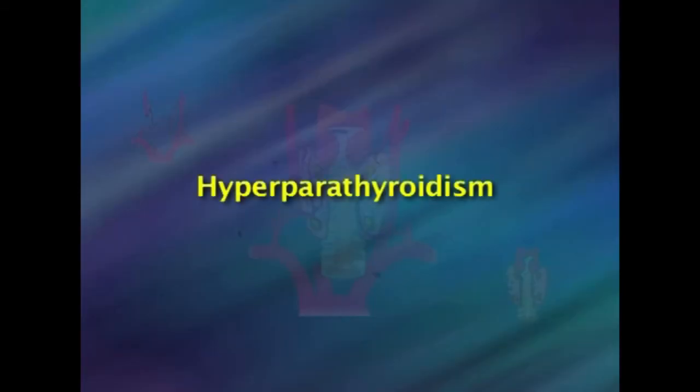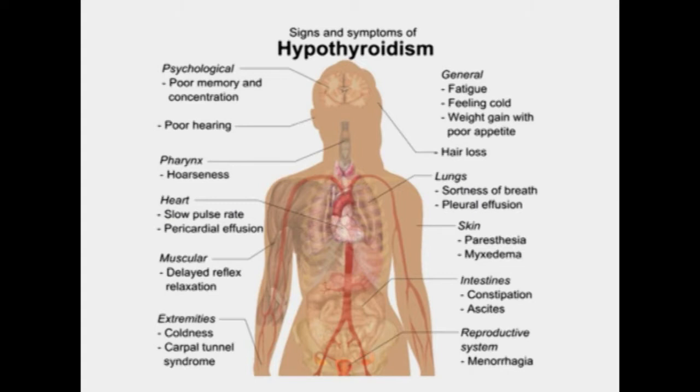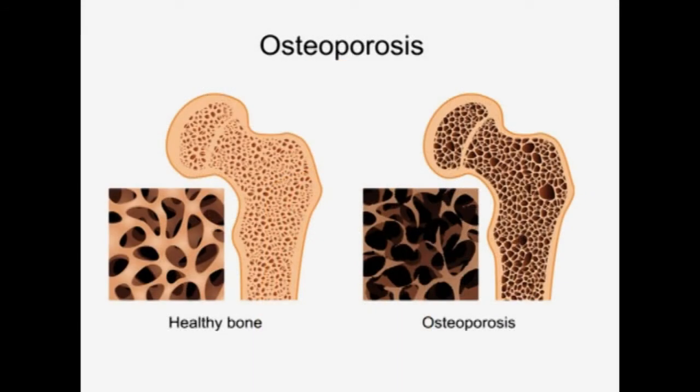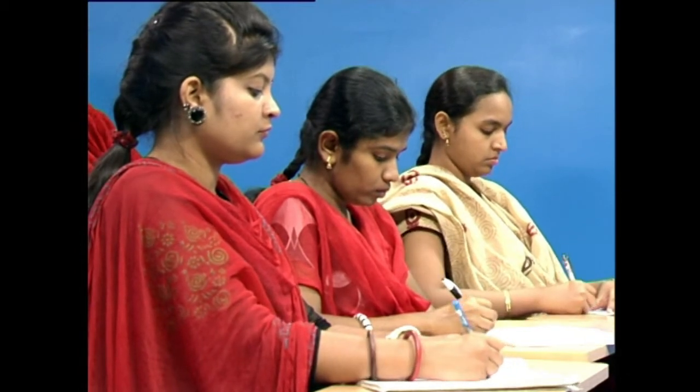The primary disease of the parathyroid gland is overactivity — too much parathyroid hormone is produced. This is called hyperparathyroidism. Under this condition, one or more parathyroid glands behave inappropriately by making excess hormone regardless of the calcium level. The glands continue to make large amounts of parathyroid hormone even when calcium is normal and should not be making hormone at all.